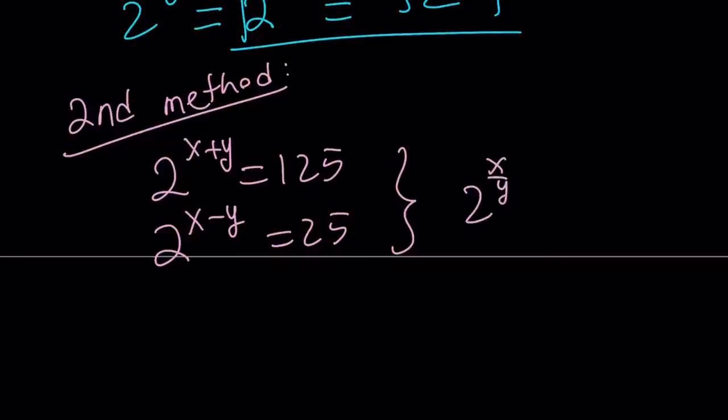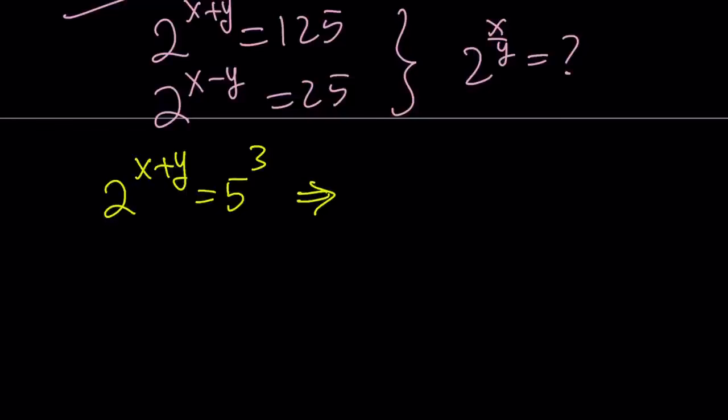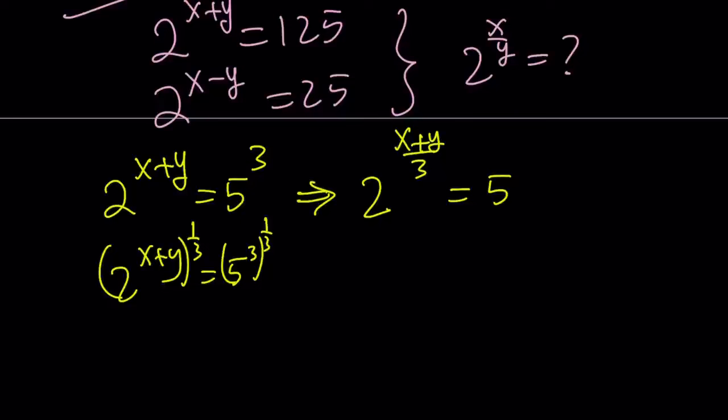2 to the power x plus y is 125, and 2 to the power x minus y is 25. And I'm supposed to evaluate 2 to the power x over y. So the idea is you don't have to find x and y individually. To find x over y, it's basically a ratio. And notice that on the right-hand side, I have 125 and 25, which are both powers of 5. So that's an advantage. Let's go ahead and take advantage of that fact. So now I can write this as 2 to the power x plus y equals 5 to the power 3. I want to isolate 5, so raise both sides to the power 1 third. You can get 2 to the power x plus y over 3 equals 5.